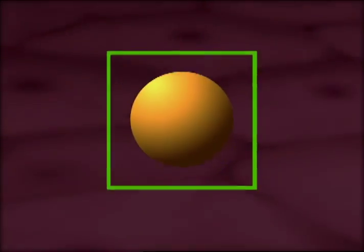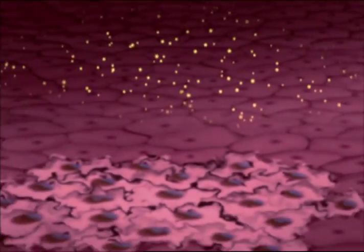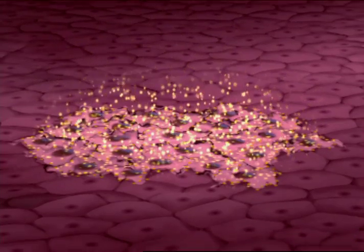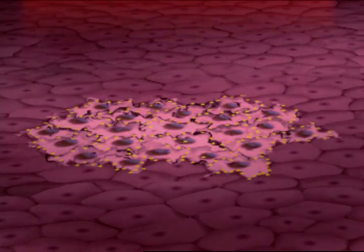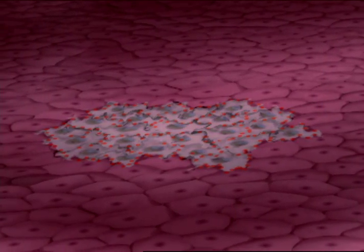Nanoshells can be linked to antibodies that recognize tumor cells. Once they are taken up by the cancer cells, near-infrared light is applied, killing only the tumor and leaving neighboring healthy cells intact.